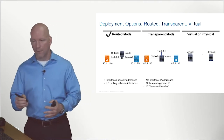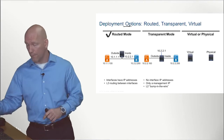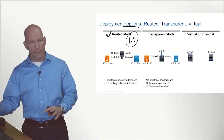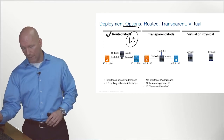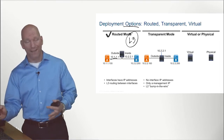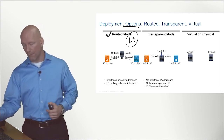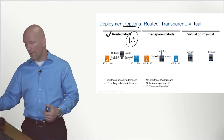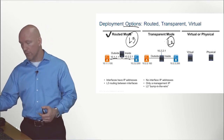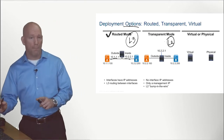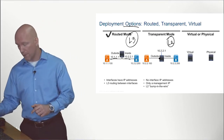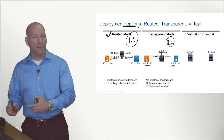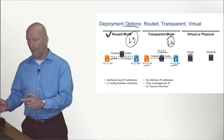Continuing on with deployment modes: layer 3 routed mode is literally a bump in the stack — where 'stack' refers to the IP stack — with different subnets on the Firepower appliance interfaces. We also have transparent mode, a layer 2 mode that is just a bump in the wire, where everything is on the exact same subnet — in this example, the 10.2.2 subnet.